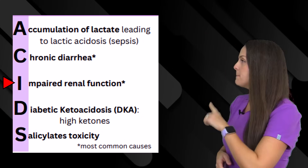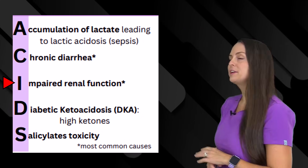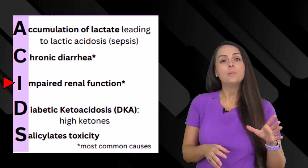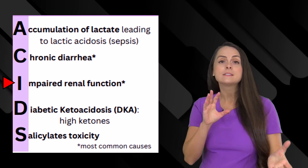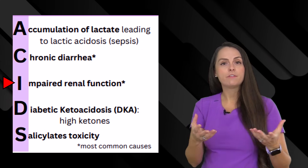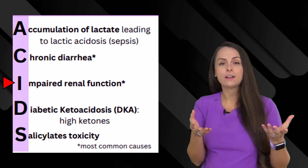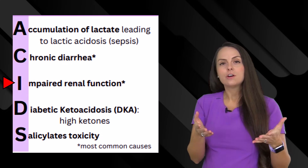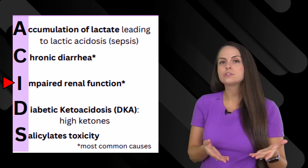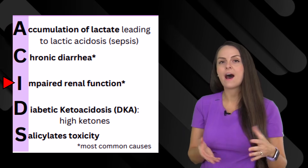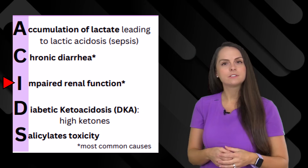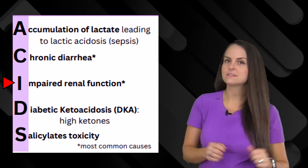I is for impaired renal function. Your kidneys play a huge role in helping you balance acids in the body — they help get rid of hydrogen ions. So if the kidneys aren't working very well, we're going to start to have high amounts of waste, hence acids in the body, which leads to acidosis.